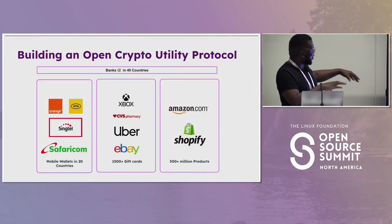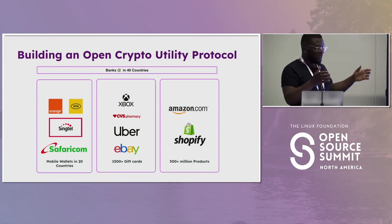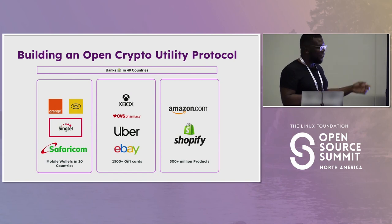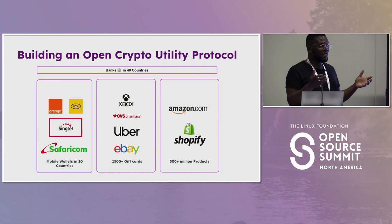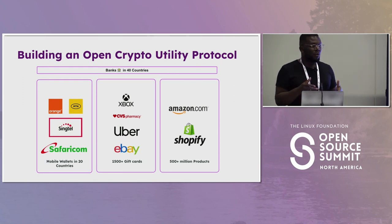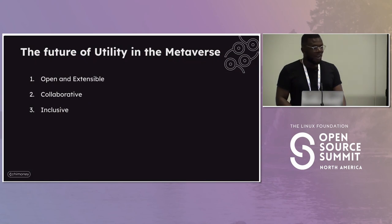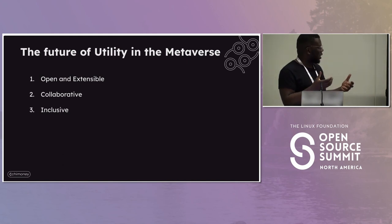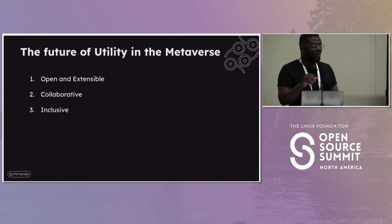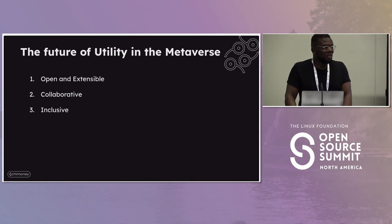With UniSpend, users can cash out from five different blockchains to over 500 million products from Amazon, over 2,000 different gift cards, and even offline payment systems in Africa — for example, mobile money in Kenya. We're also looking at adding WeChat Pay, so someone with a token on one ecosystem can cash out to their WeChat Pay wallet. Ultimately, to bring utility to the metaverse we need to build in the open, collaboratively and inclusively.